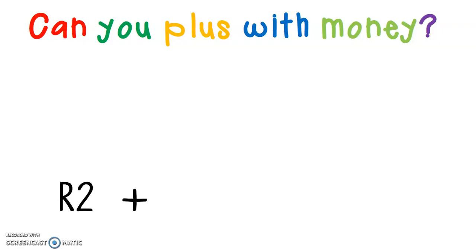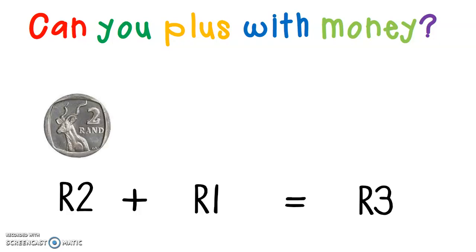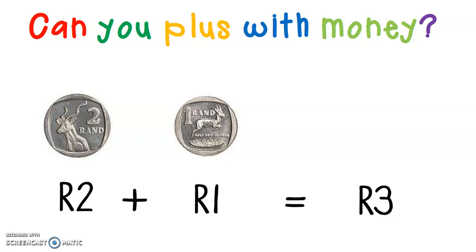Here we have 2 Rand plus 1 Rand equals 3 Rand. So what would my coins look like? It's a 2 Rand coin plus a 1 Rand coin. So 2 Rand plus 1 Rand equals 3 Rand, but we have no coin for a 3 Rand. We only have a 2 Rand, 1 Rand, and 5 Rand coin in silver.